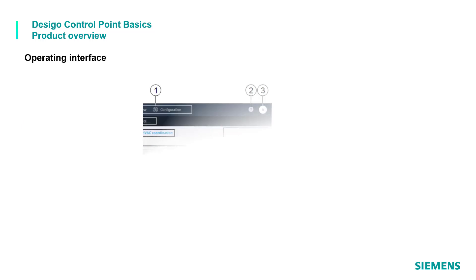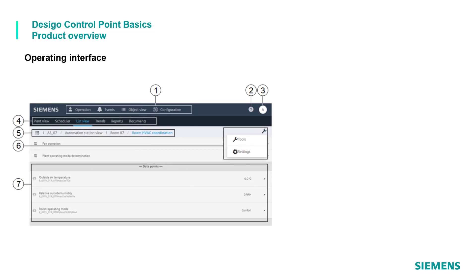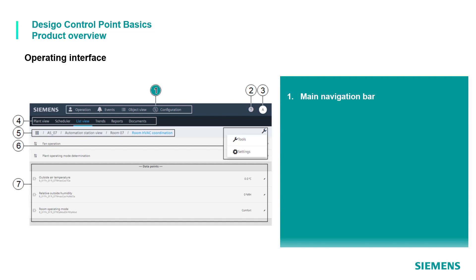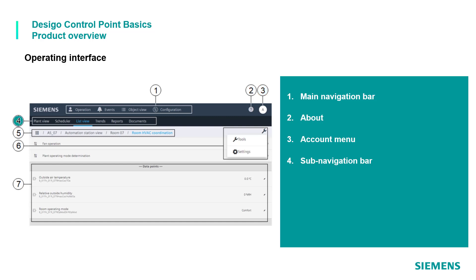With the current version 4.3, there is a new user interface. At the top is a main navigation bar collecting all core applications, along with an 'About' section offering system version and provider information, and an account menu providing current logged-in user info, the log-off function, and additional user settings. Below the main bar is the sub-navigation bar, strictly related to the selected core application, providing sub-applications like plant view, scheduler, list view, trends, and reports.